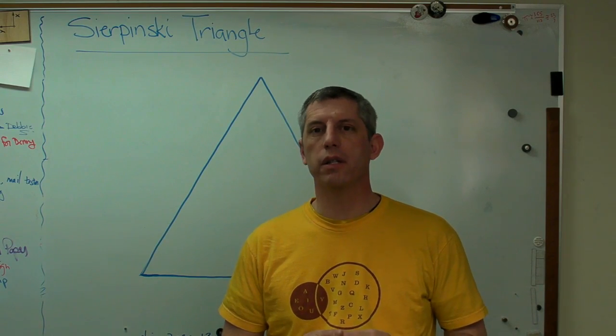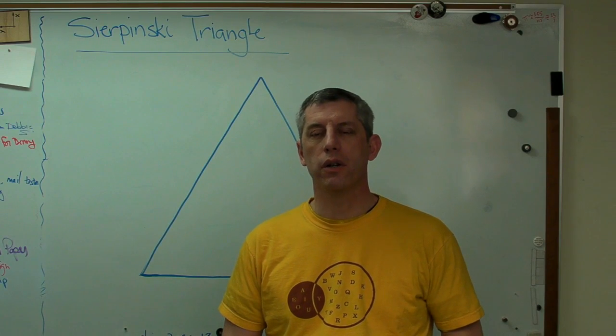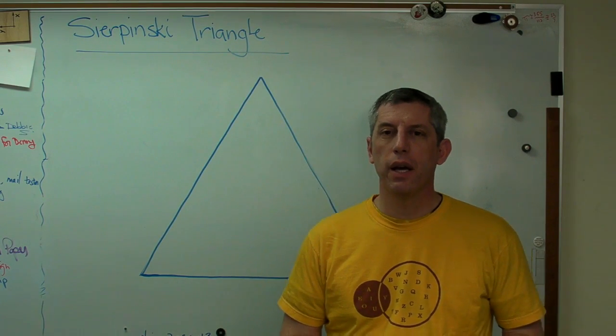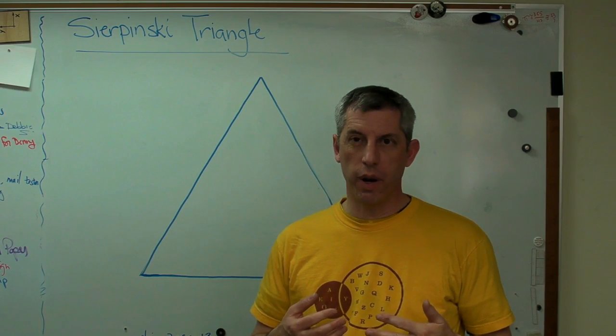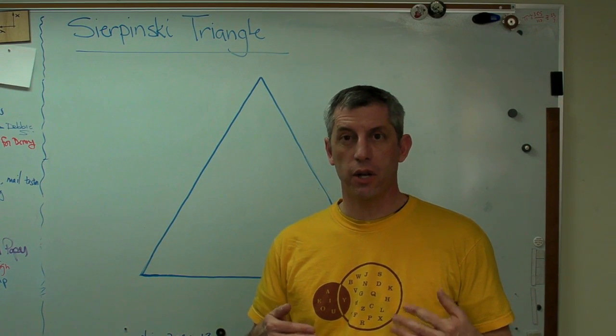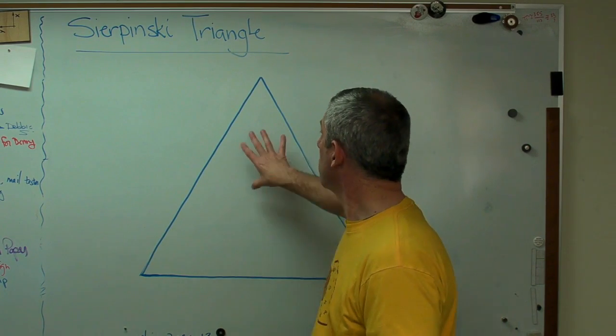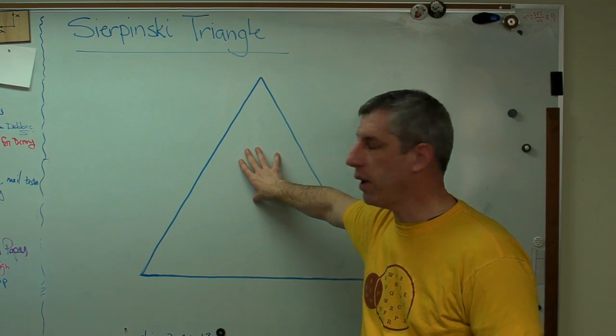The Sierpinski's Triangle is a fractal shape that's at least related to the Koch Snowflake that I talked about in an earlier video. And it's made in the same sort of way. It's made by repeating a set of instructions starting with a certain shape. And just like the Koch Snowflake, the Sierpinski's Triangle starts with an equilateral triangle.